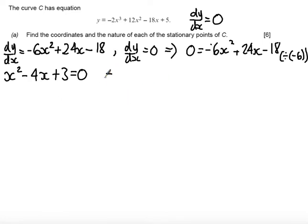So now we can factorise this and get that x minus 3 times x minus 1. So they are the factors of plus 3 that add to give us minus 4. It's equal to 0.